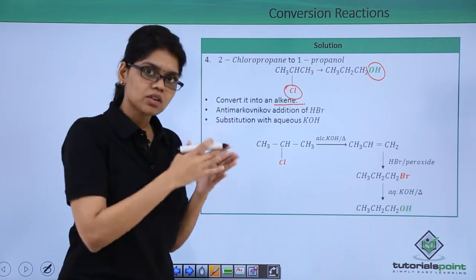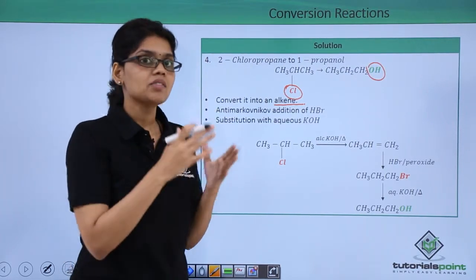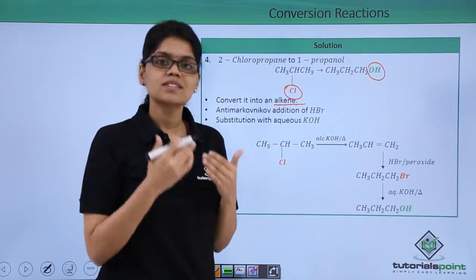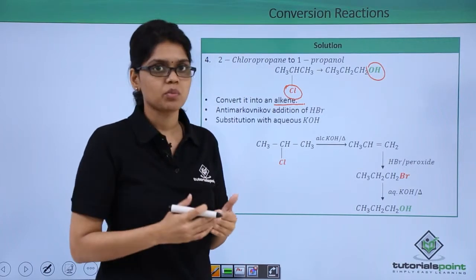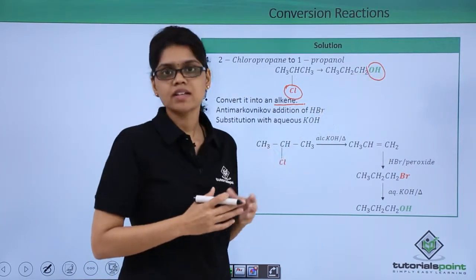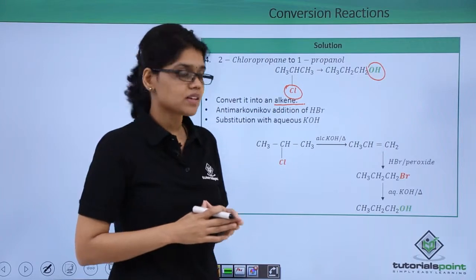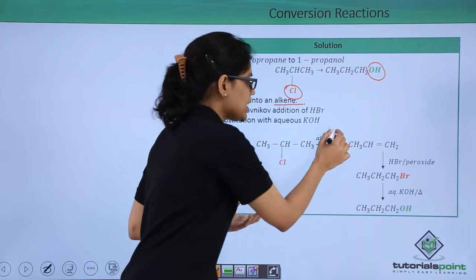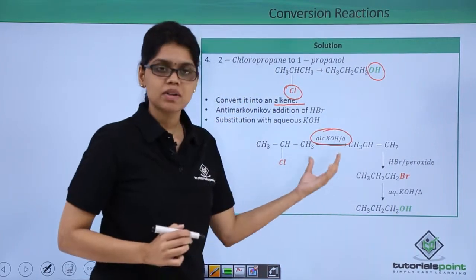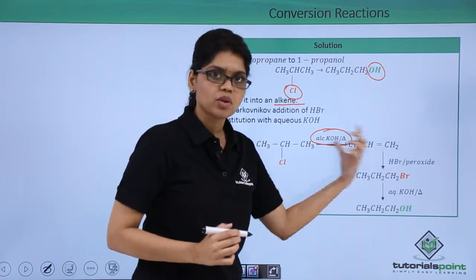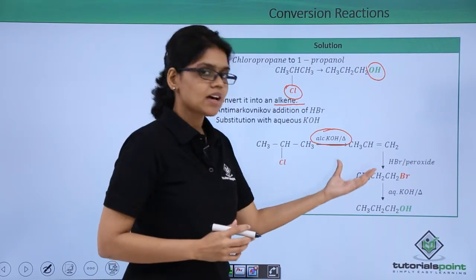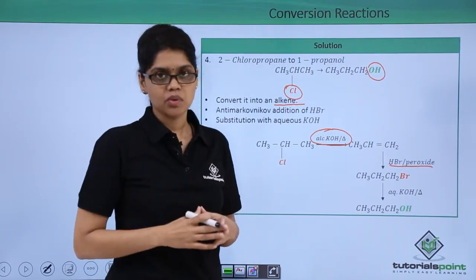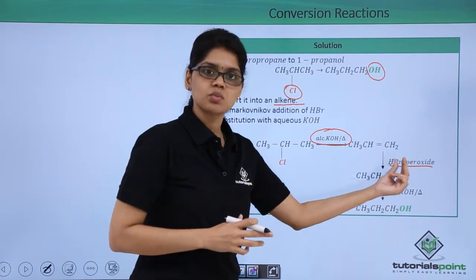When we have anti-Markovnikov product you have Br at C1 position, and since bromine is a very good leaving group you can simply use aqueous KOH to substitute that bromine and introduce OH at that position. Let's now try to carry out this reaction. This alkyl halide undergoes elimination reaction by reacting with alcoholic KOH in the presence of heat giving CH3CH=CH2. Now this alkene reacts with HBr in the presence of peroxide to give anti-Markovnikov product which is CH3CH2CH2Br.